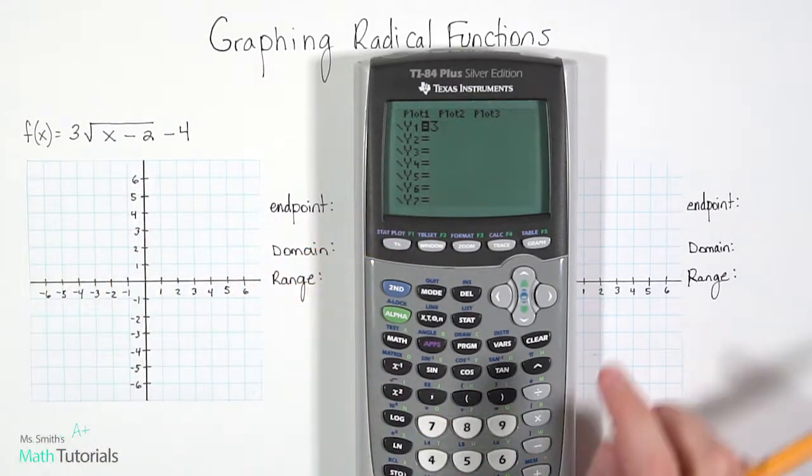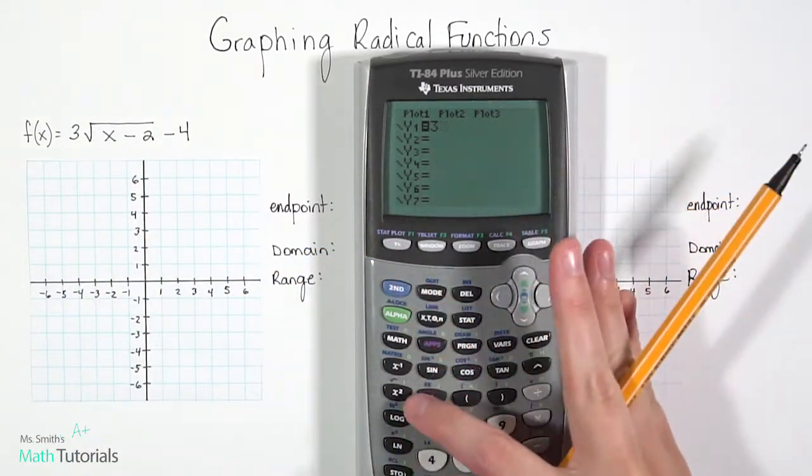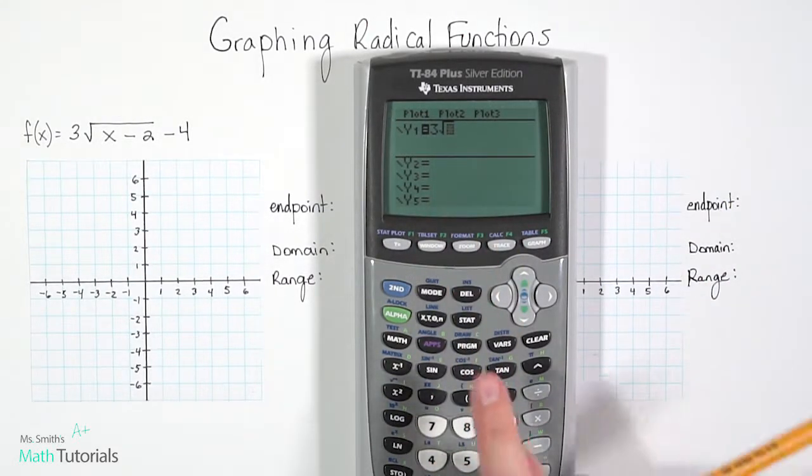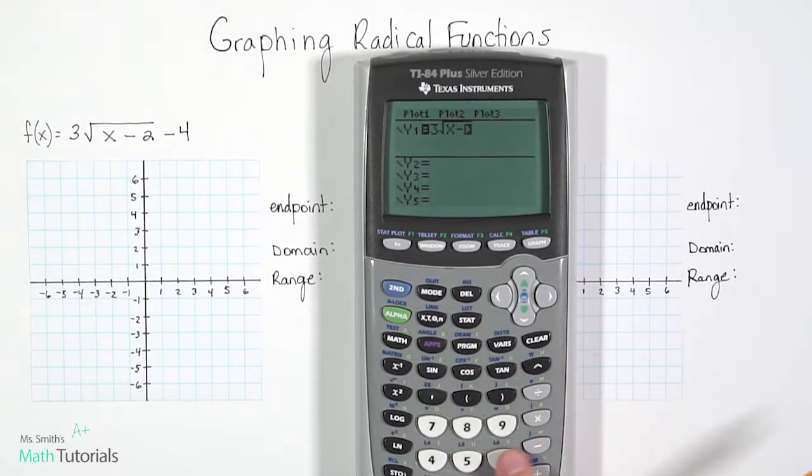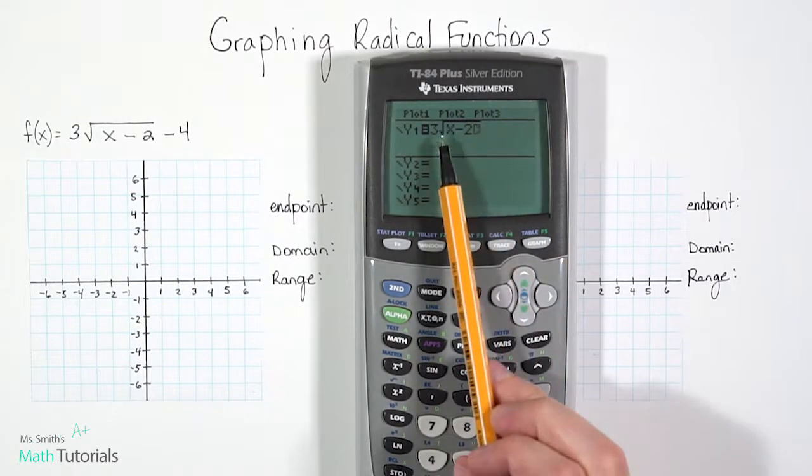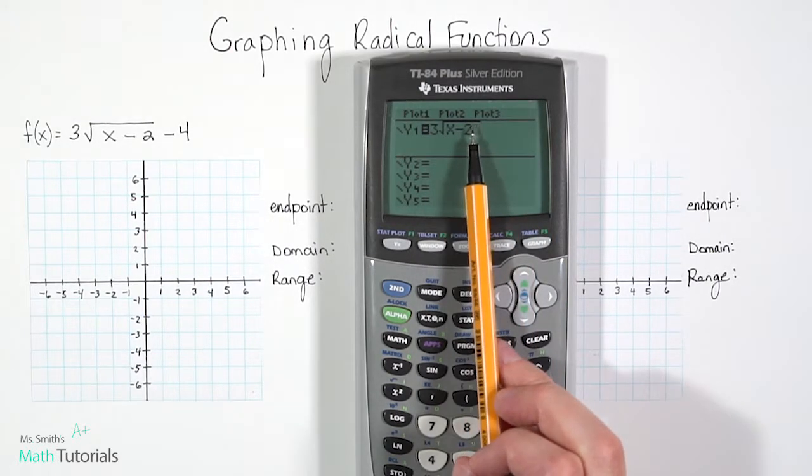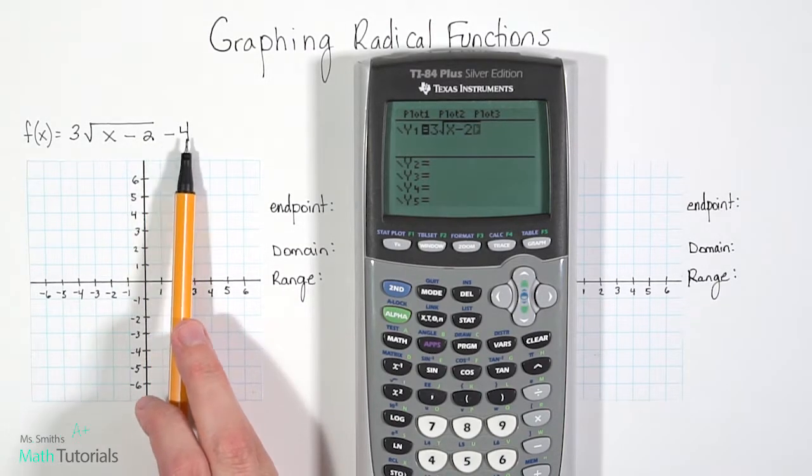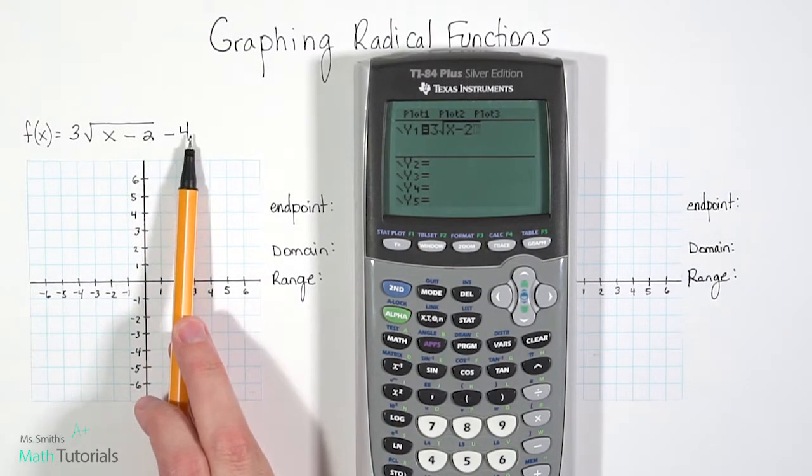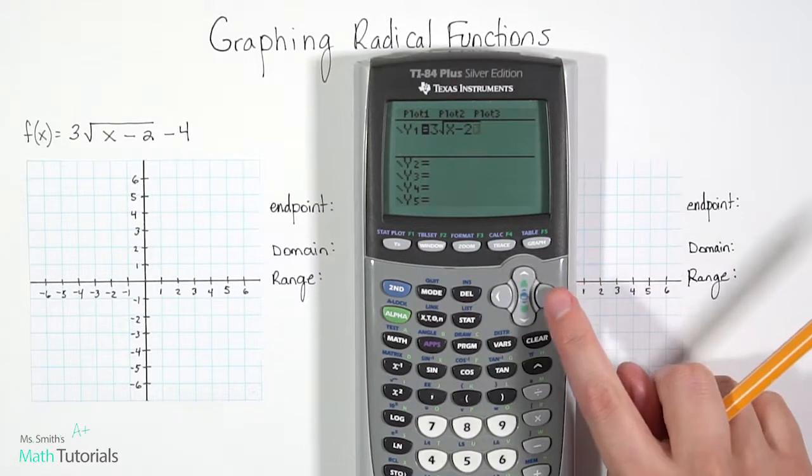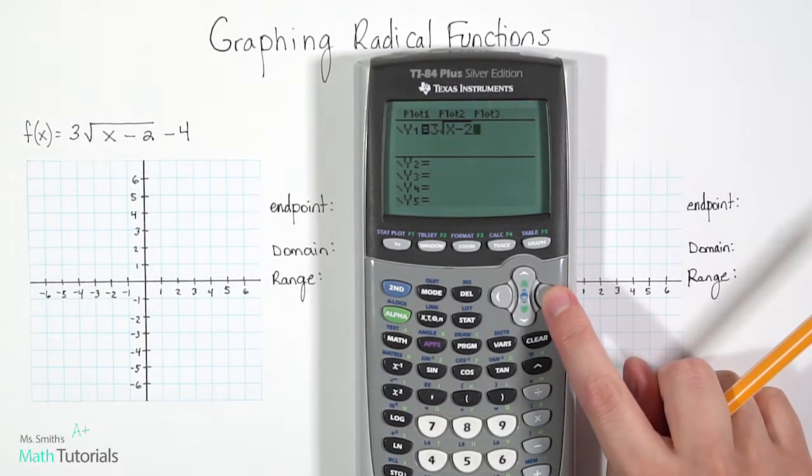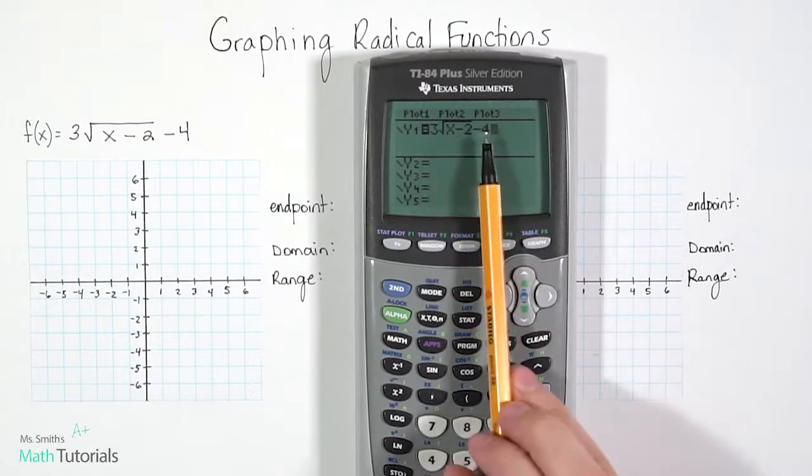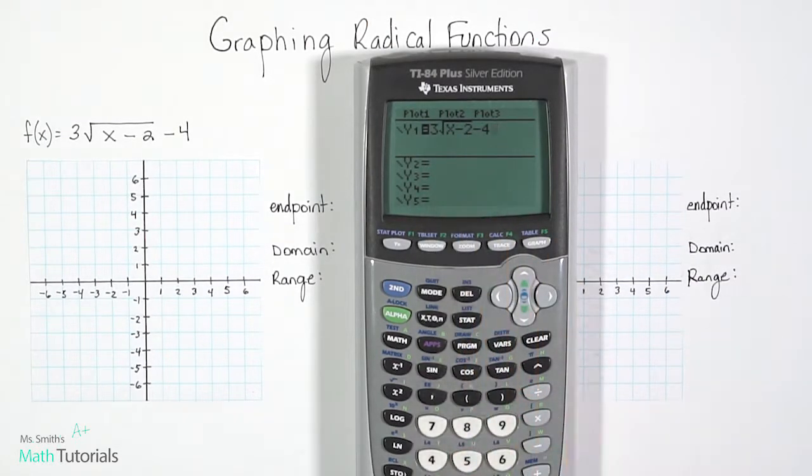So 3, and then we'll do our square root. Now that's second, and then that little x squared button pulls up your square root, and then we'll type in x minus 2. Now notice right now I'm underneath that radical, which is what I want to do because that's what I see here. But now for the negative 4, I want to jump out from underneath the radical. So you hit this little right arrow, and that stops the radical, and then you'll do your minus 4. So notice the only thing under the radical is the x minus 2.